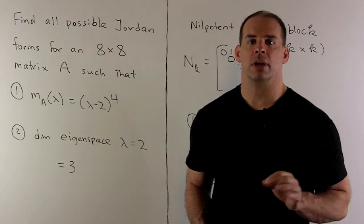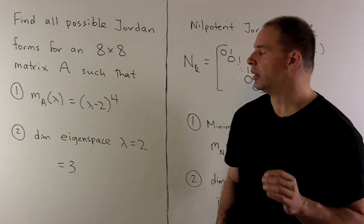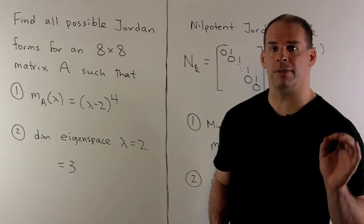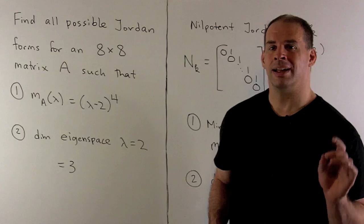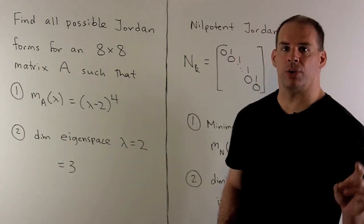Find all possible Jordan forms for an eight-by-eight matrix A with the following properties. First, the minimal polynomial of A is equal to lambda minus two to the fourth power. Then, the dimension of the eigenspace for eigenvalue two is equal to three.